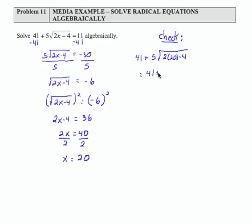41 plus 5 times the square root of 36. I'm just working with the left-hand side here, as you can see, 41 plus 5 times 6.